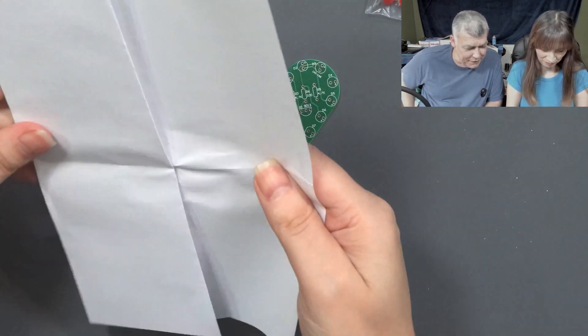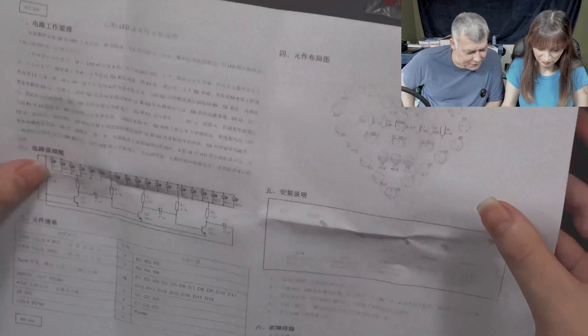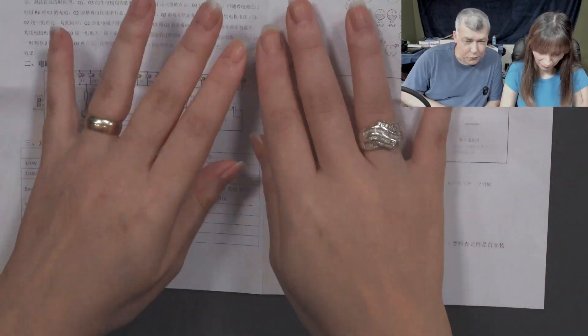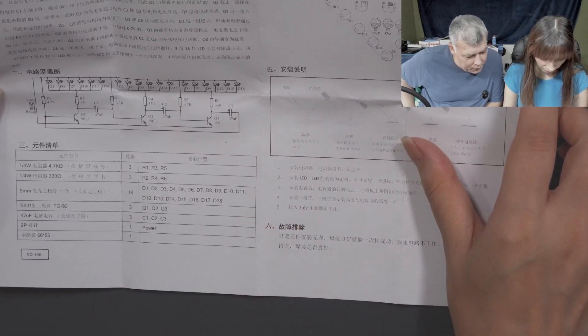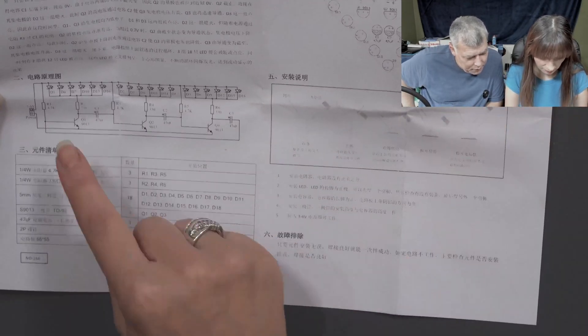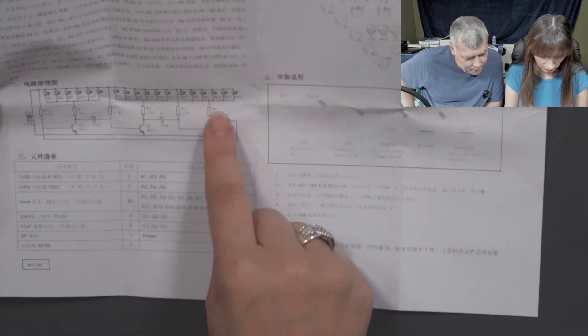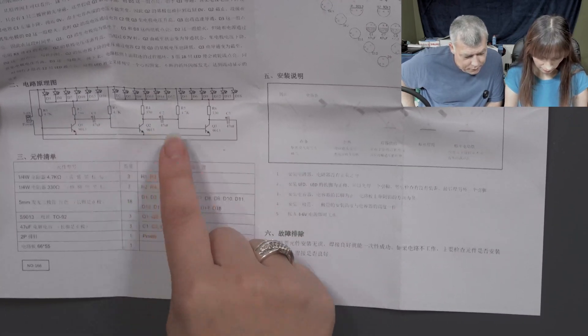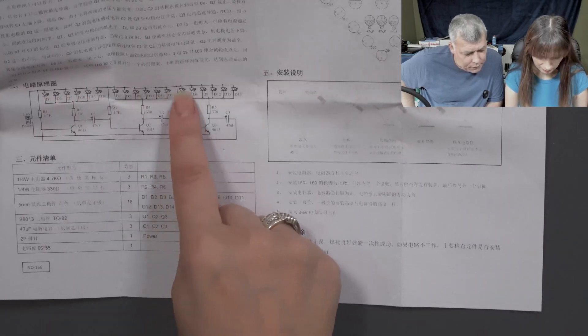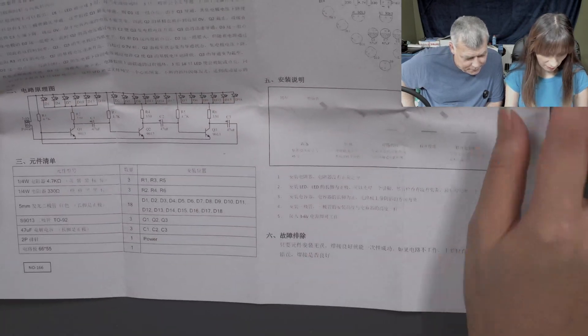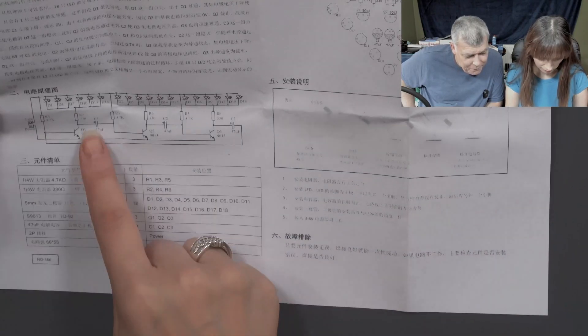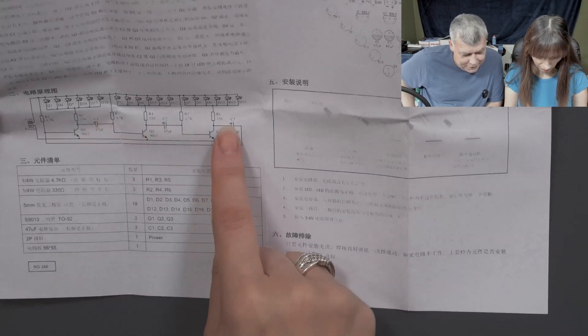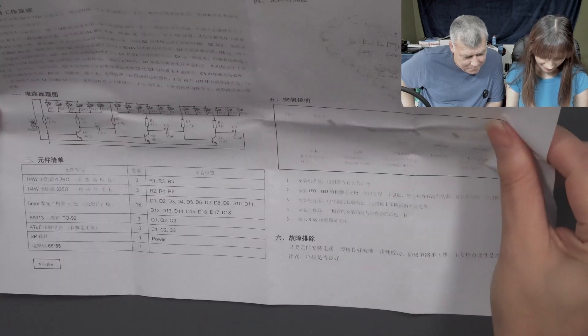We have the schematic there in Chinese. This is beautiful. Let's check here. It's simple - three transistors, a few resistors, not that complicated. That's the resistor, that's the transistor, that's the LEDs, and that's the battery. What about the capacitors? Those ones, there are three. Easy.